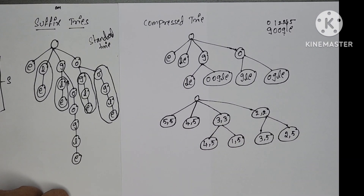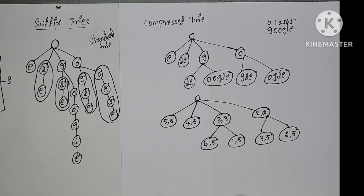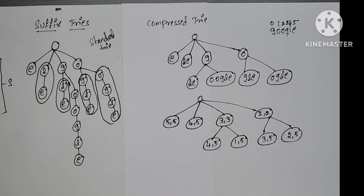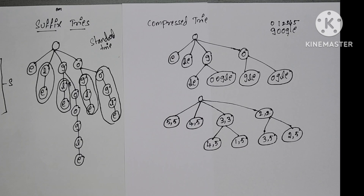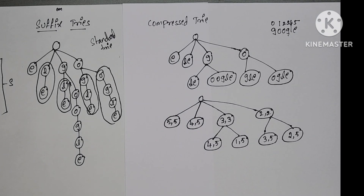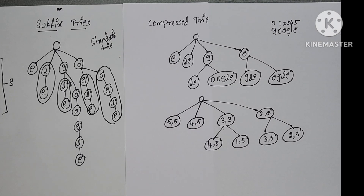Overall, what is suffix trie? Compressed trie for all suffixes is called suffix trie. We have to write all suffixes, then create a standard trie, then compress it.